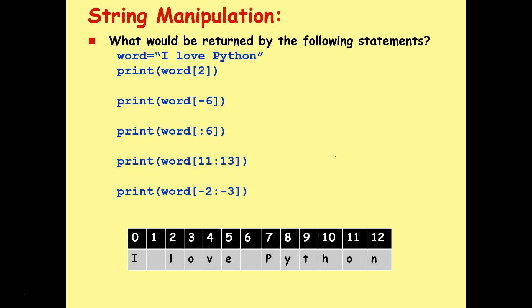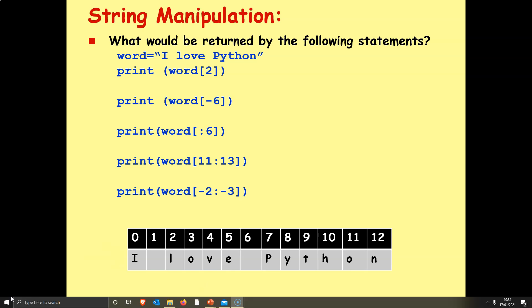Okay, let's do a little bit of practice with that. If my variable word is I love Python, and I print word 2, I print word minus 6, I print word colon 6, I print word 11 colon 3, I print word minus 2 colon minus 3, what's it going to print out? So I've got the whole string down here at the bottom for you. Pause the video, what do you think it's going to print out?